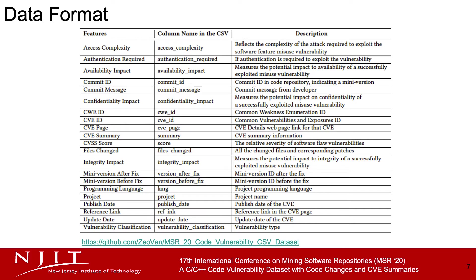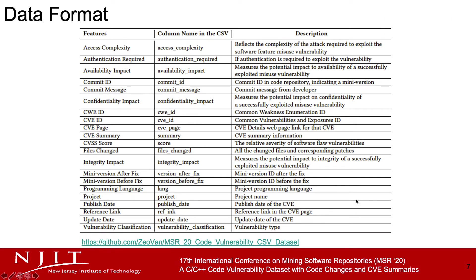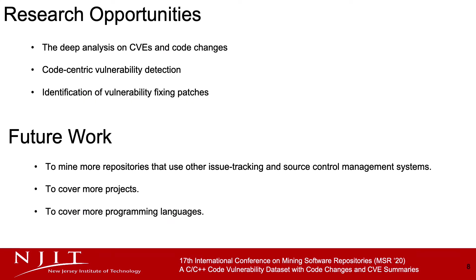We store our dataset in CSV format. This table describes each CVE feature and its corresponding column name in our CSV file. Our dataset with supporting collection scripts is available on GitHub. Our BigVul dataset can be used for many vulnerability-related research areas, for example: deep understanding of CVE and code changes, code-centric vulnerability detection, and identification of relevant code changes.